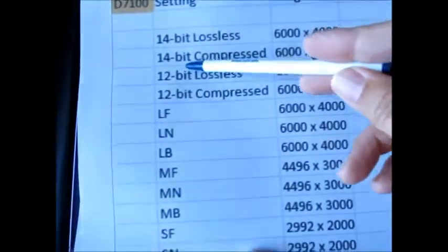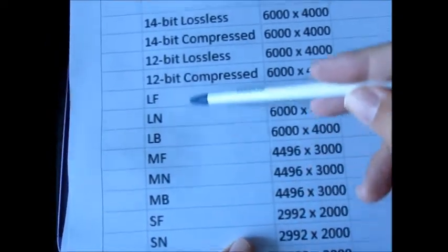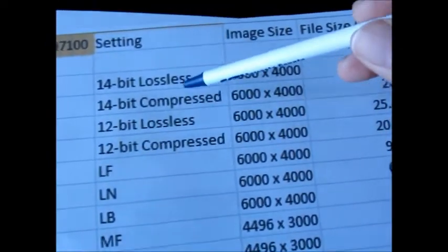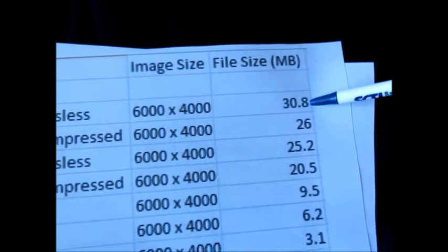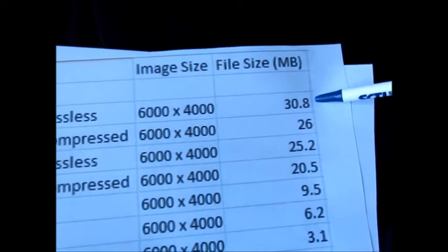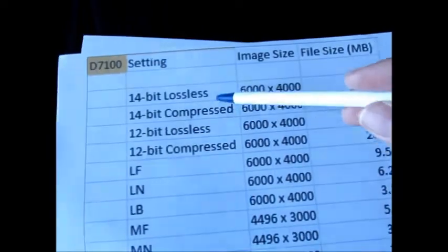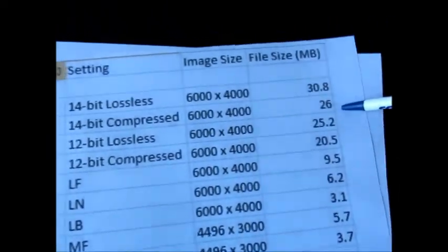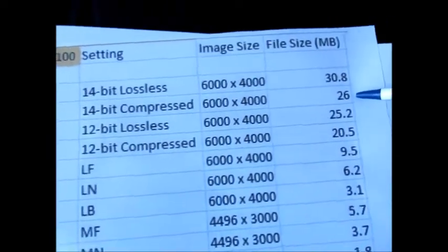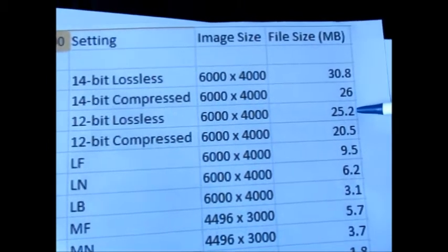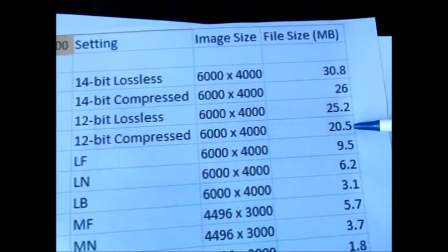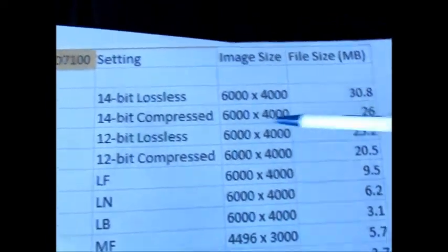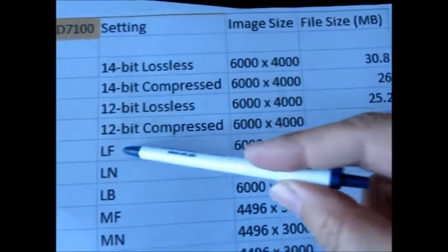Lossless, you're looking at—all these are the same image, all these file sizes. I took the same exact image to minimize any variables. With this image I had a 30.8 megabyte file, so one image is 30.8 megs. 14-bit compressed: 26 megs. 12-bit lossless: 25.2. And then 12-bit compressed is 20.5 megabytes. So that ends the RAW files. These first four are RAW.